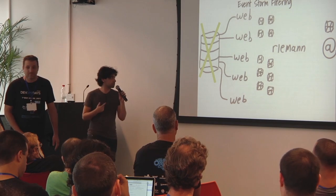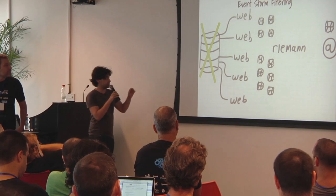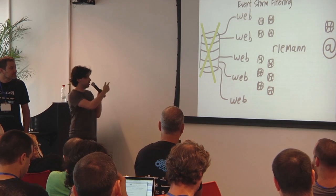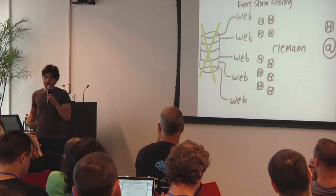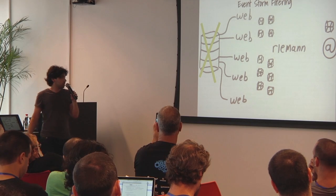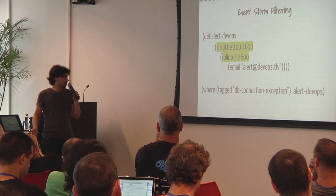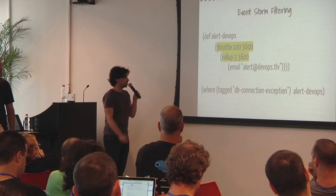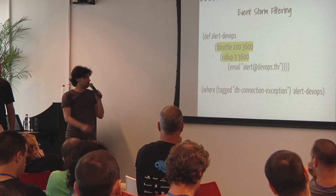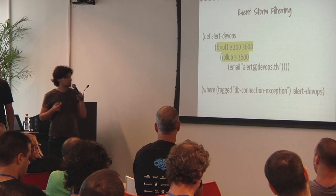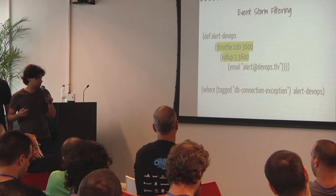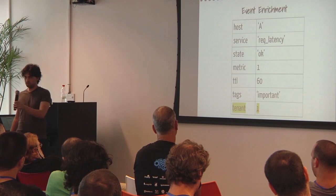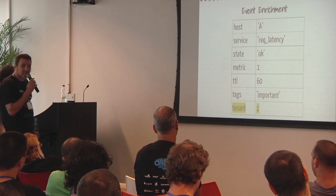Consider a system with a database and many web servers connected to it holding a database connection. When the database crashes, every server sends out a database connection error. These errors are all the same — we don't really need them all. You can filter these with Riemann using throttle and rollup. The end result will be two emails: one containing one event at the beginning of the hour, and another 98-event email at the end of the hour.